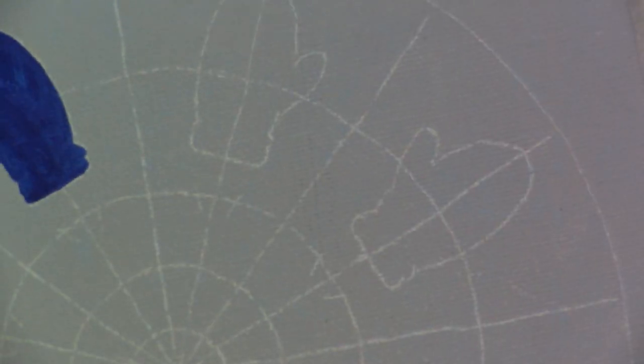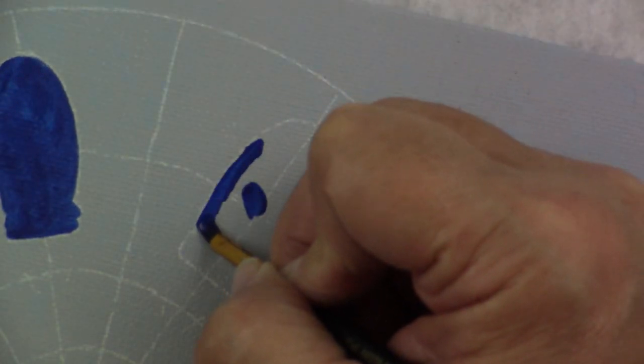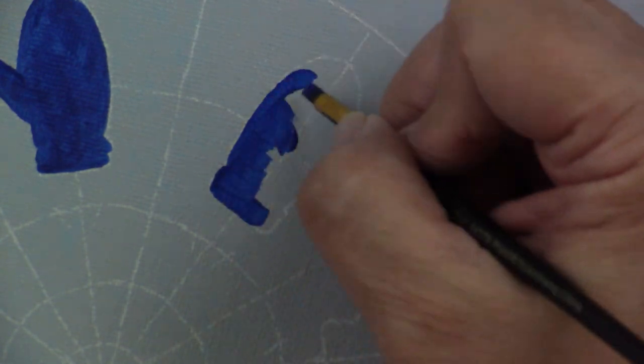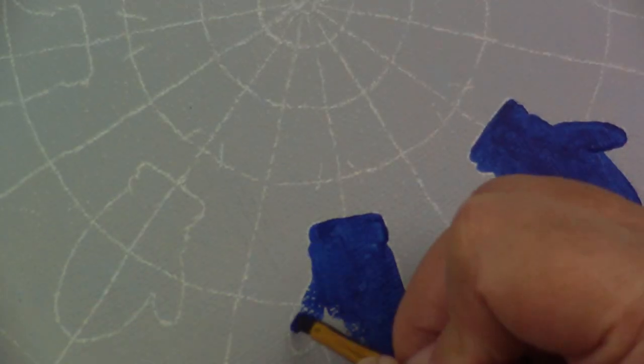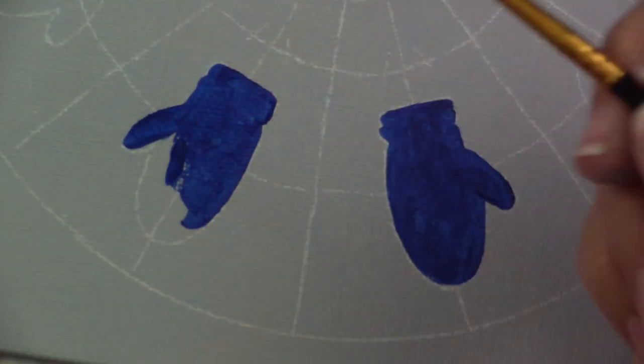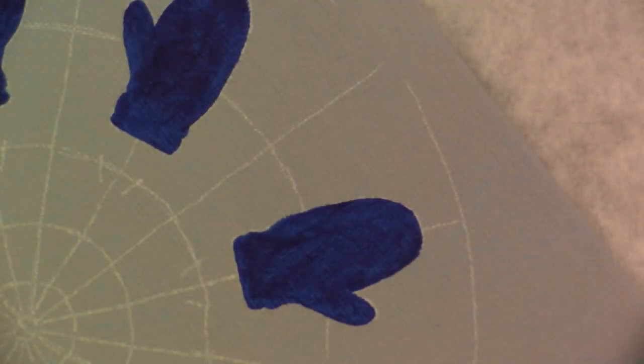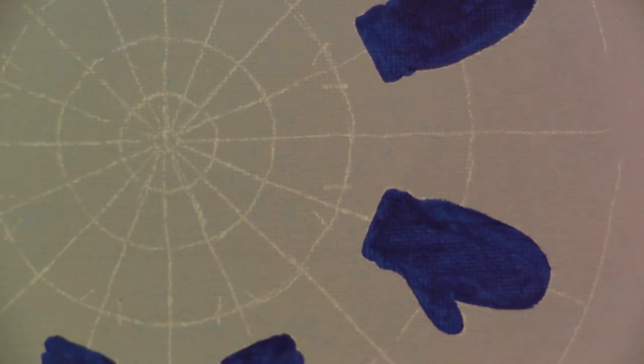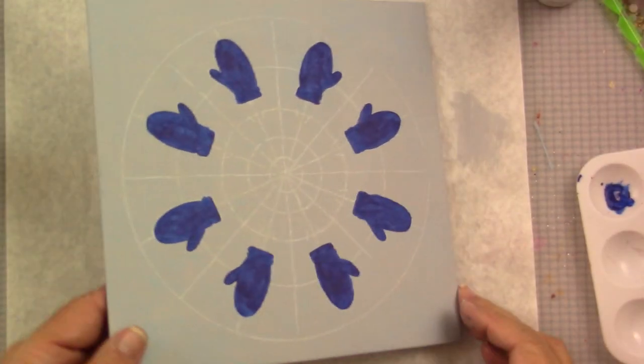This would be fun in lots of different colors. If you had all the mittens different colors, that would be really fun. We'll do that all the way around for each of the eight mittens in this design. It has been snowing here in Colorado, so Piper, our four-year-old granddaughter, has her mittens out.